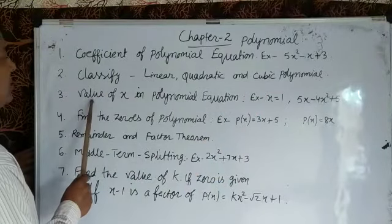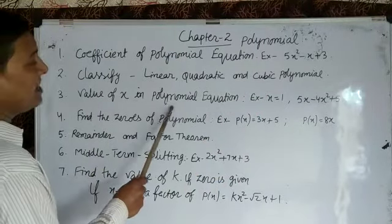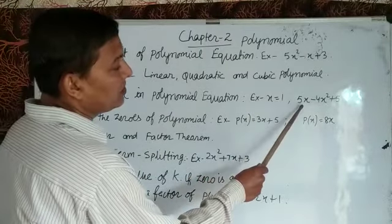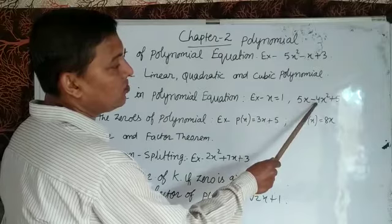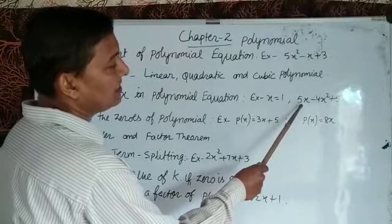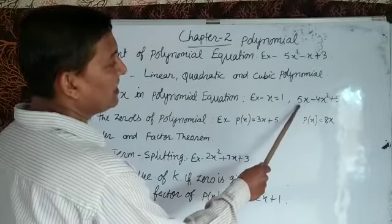Third concept is finding the value of x in polynomial equation. For example, x = 1 in equation 5x - 4x² + 5. By putting value of x in this equation, we get the answer.